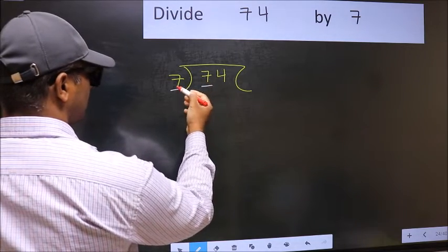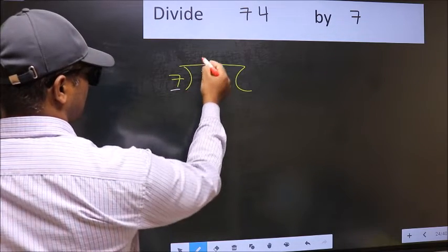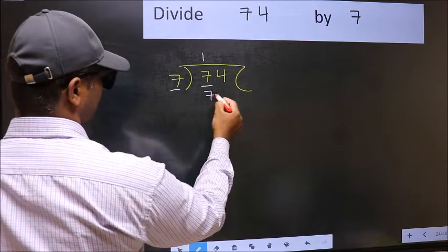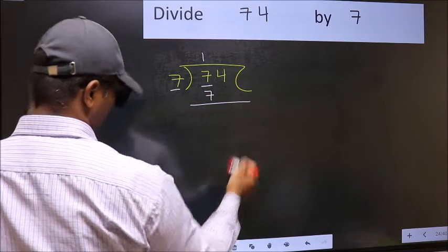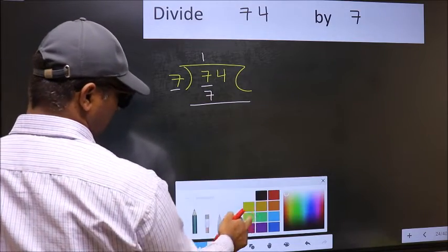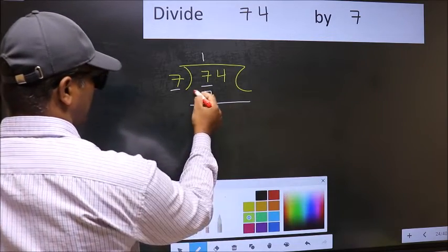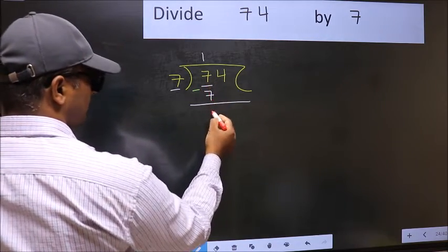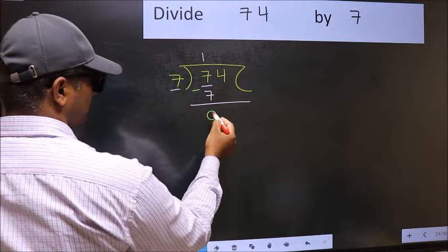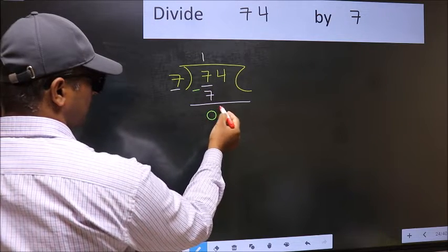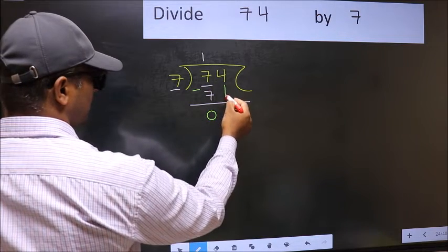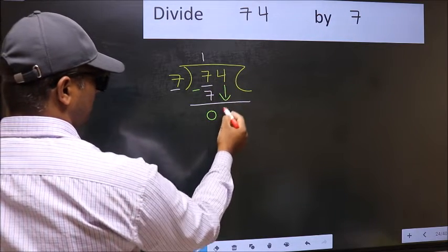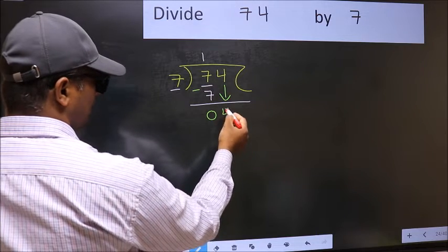When do we get 7 in the 7 table? 7 once is 7. Now you should subtract: 7 minus 7 is 0. After this, bring down the beside number. So 4 comes down.